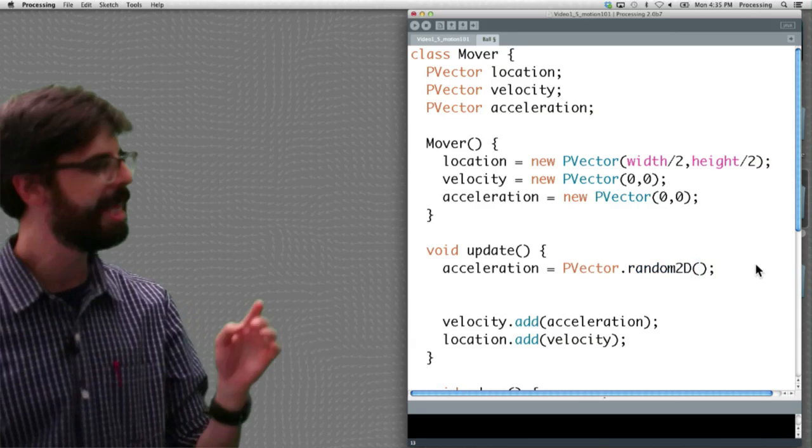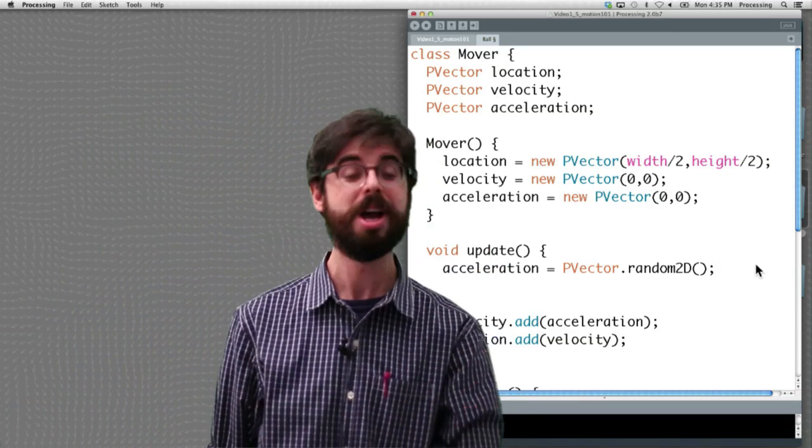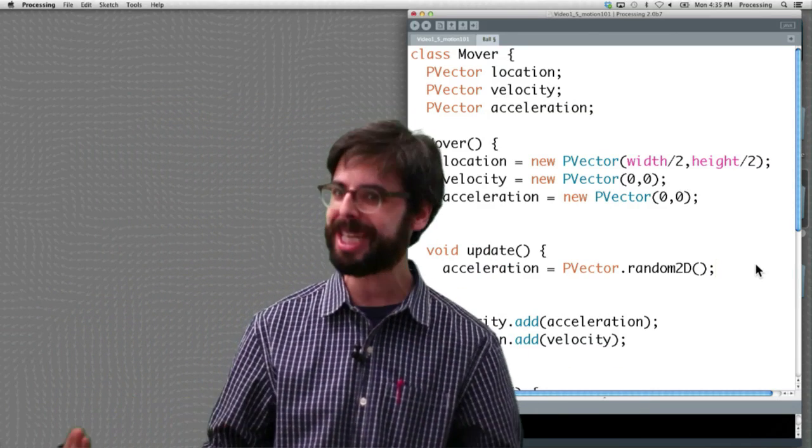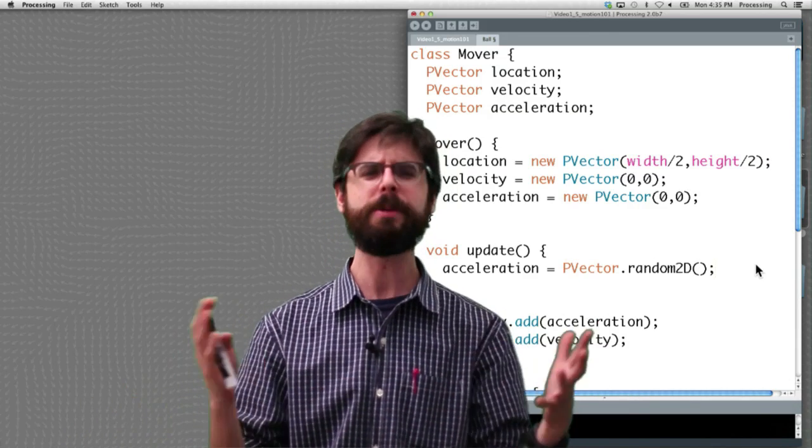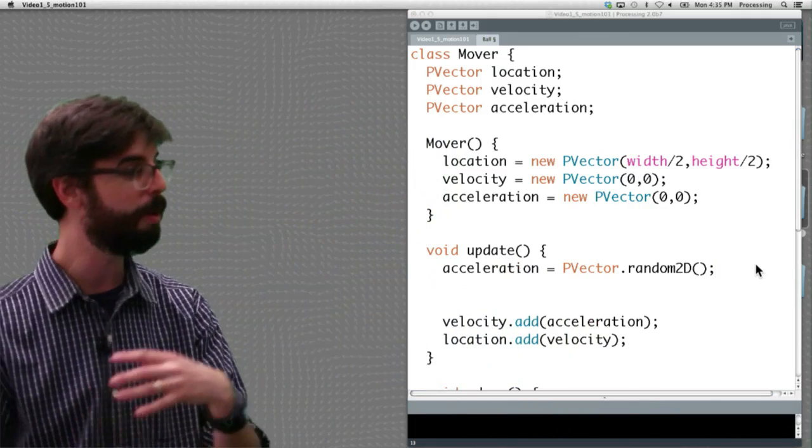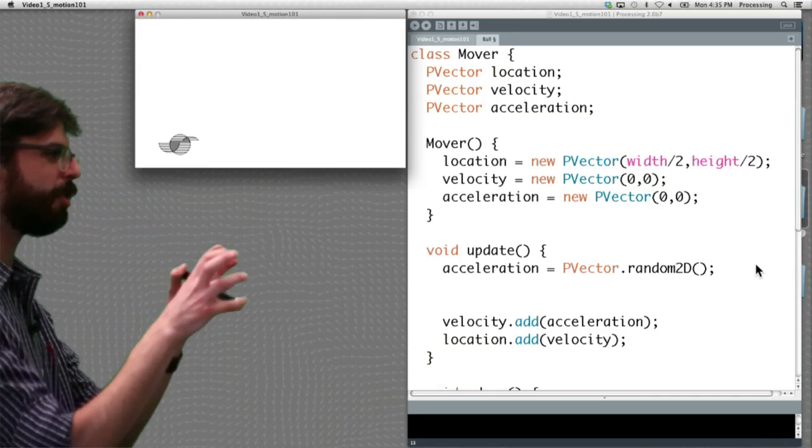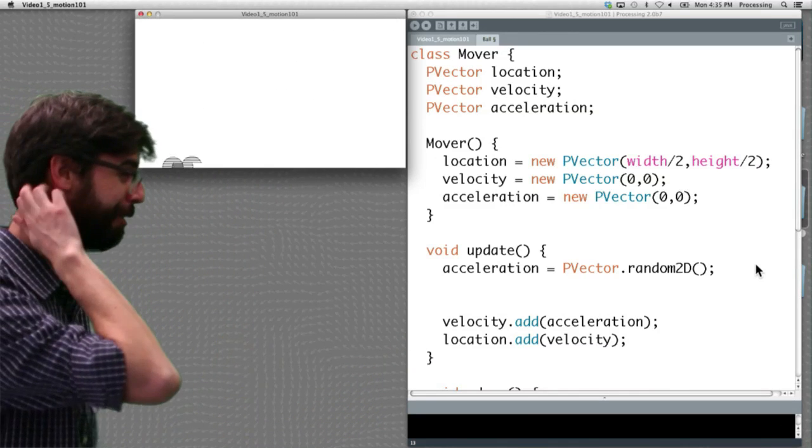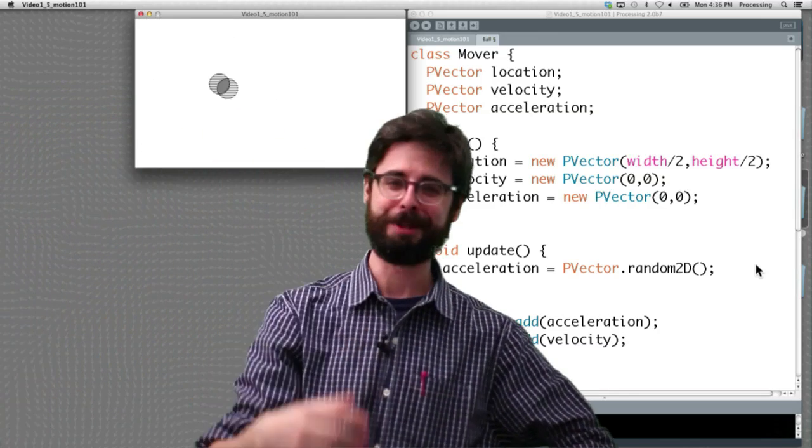Now notice that we have to specify 2D here. This is one of the times where we want to make sure we don't get a random 3D vector because if we get the z component, we could potentially have the x or y component at zero. Anyway, we want a unit vector that's in two dimensions. It's just x and y. So if I run this, let's take a look at what happens. We can see, look at it, it's kind of accelerating randomly. It's actually getting out of control really fast. So again, this is kind of where I need to bring something up again with you guys.